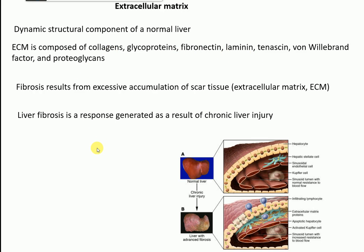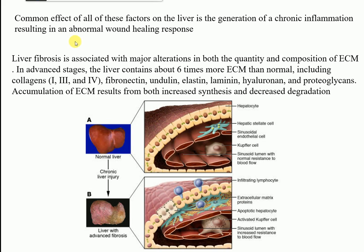A common effect of all those injurious factors on the liver is the generation of chronic inflammation resulting in an abnormal wound healing response. Liver fibrosis is associated with major alterations in both the quantity and composition of the extracellular matrix. In advanced stages of liver fibrosis, the liver contains about six times more extracellular matrix than normal. This ECM contains collagen, fibronectin, elastin, laminin, hyaluronic acid, and proteoglycans.